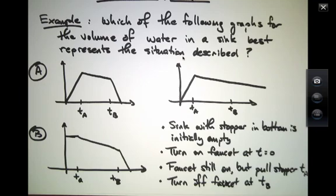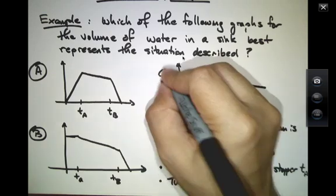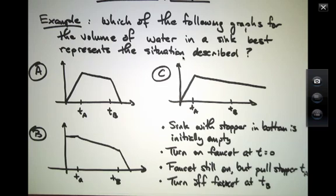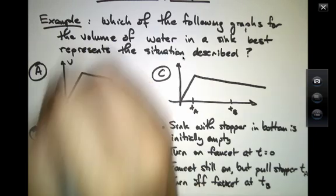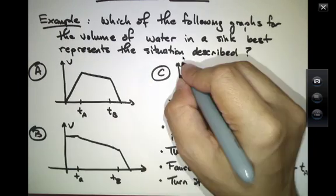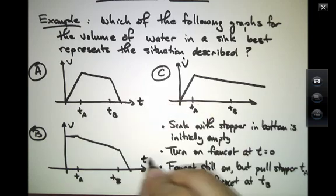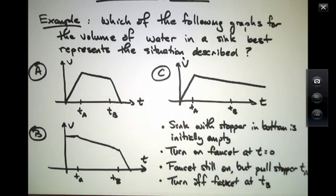Best displays the volume of water in a sink for the situation described. So there are three choices A, B, and C. And all of them graph volume on the vertical axis as a function of time on the horizontal axis.